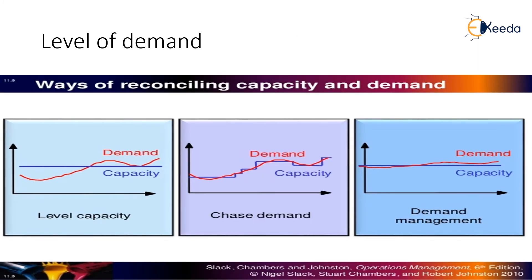Based upon the level of demand, the amount of products needed will generally be delivered to the customers. For example, during the COVID pandemic there was an extreme demand for masks and sanitizers. As per that, there were many brands and many products which were available for usage of masks and sanitizers. That is how capacity and demand are generally applicable.